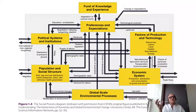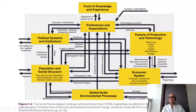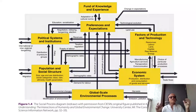We looked at the Brotherton diagram as the natural scientists' rendition of the Earth System. The social process diagram, by contrast, includes global-scale environmental processes like harvest, emission, pollution, environmental changes, and modification of the environment, alongside population and social structure including migration, political systems and institutions, fund of knowledge and experience, preferences and expectations, factors of production, technology, and economic systems. You can see how different this is from the Brotherton diagram.